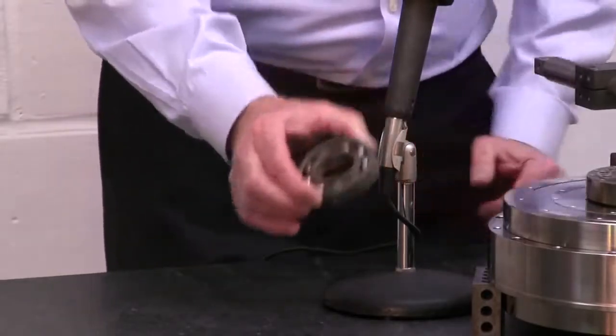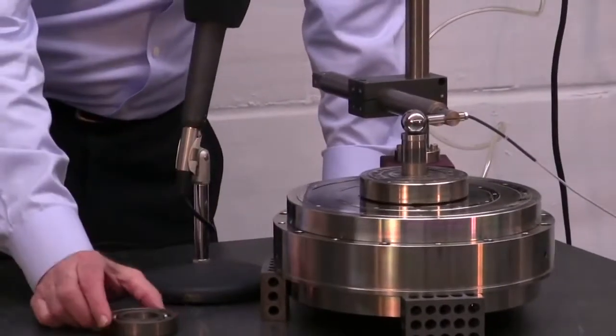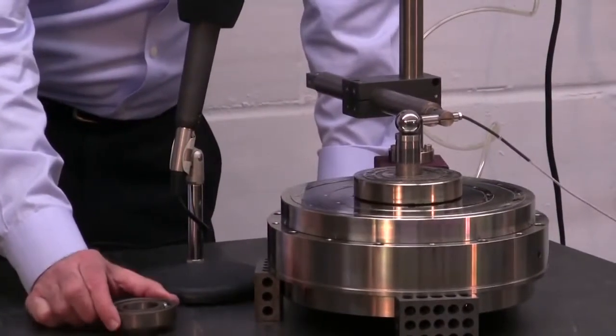An air bearing spindle has only one rotating element, so it has virtually no asynchronous error and the synchronous error is very low.